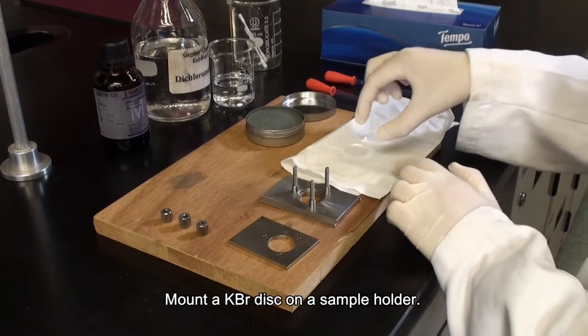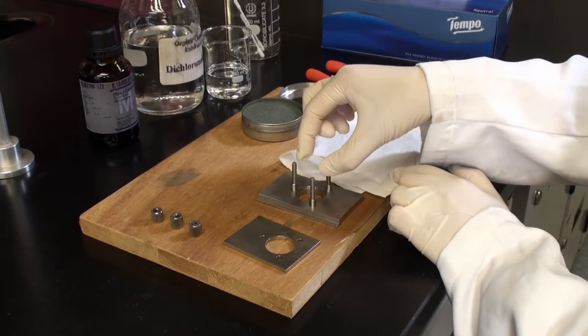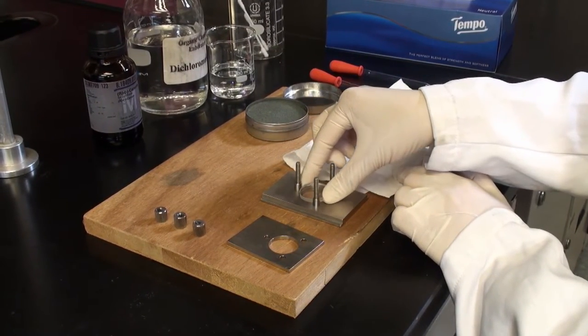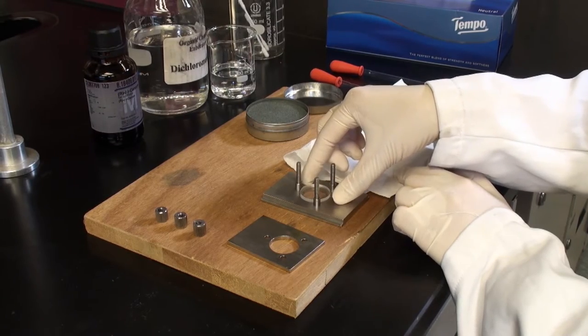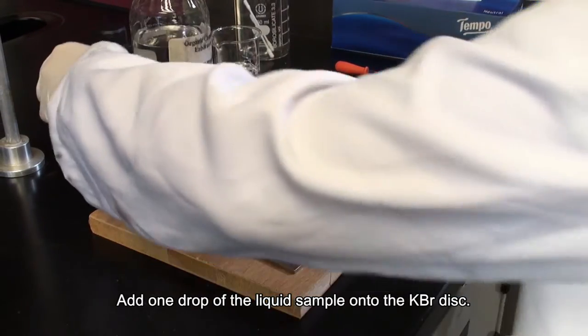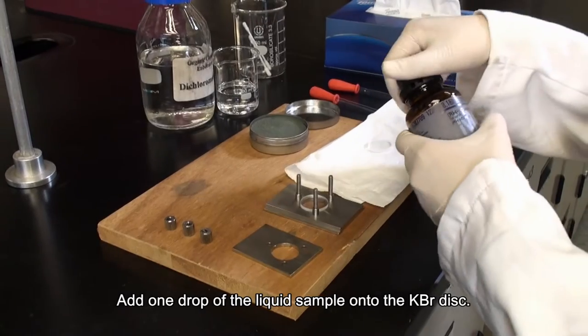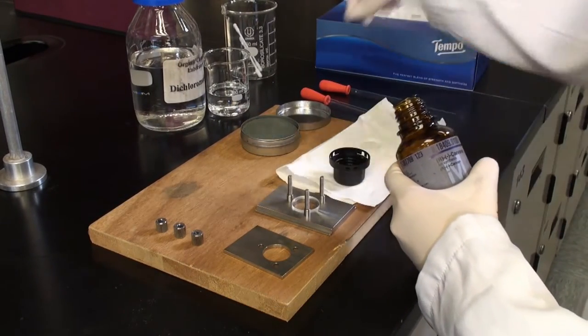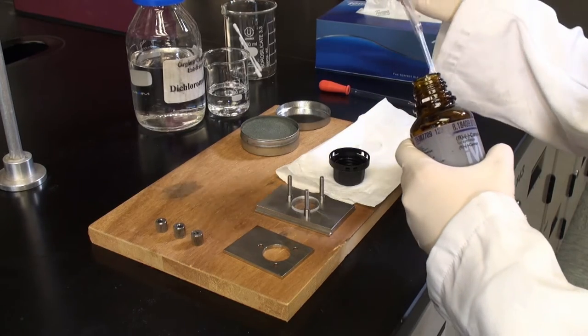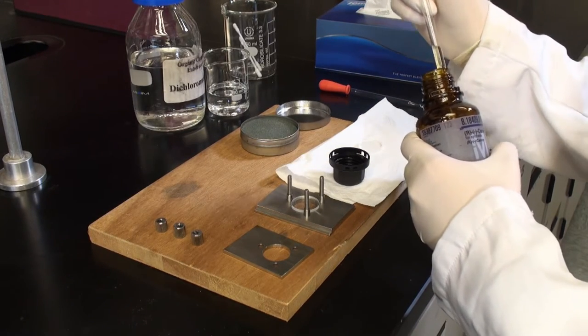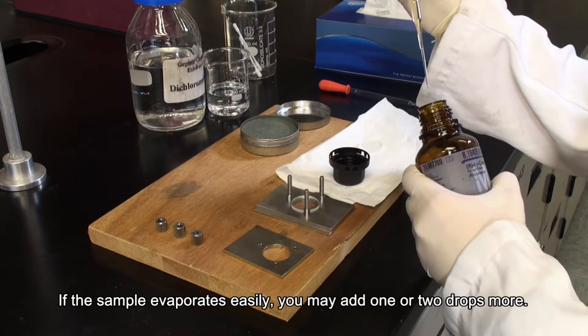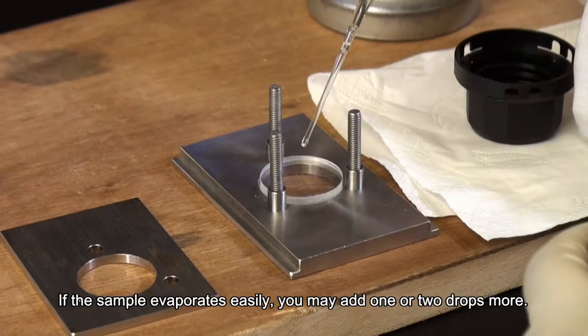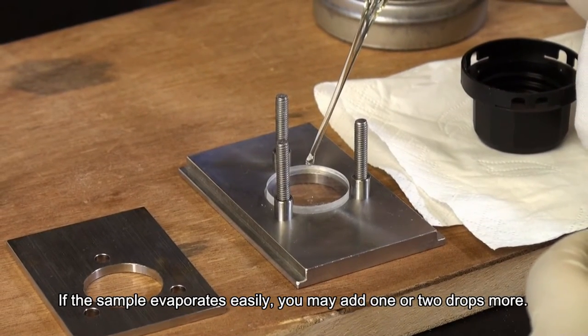Mount a KBr disk on a sample holder. Add one drop of the liquid sample onto the KBr disk. If the sample evaporates easily, you may add one or two drops more.